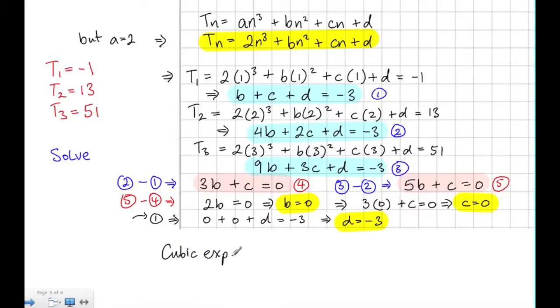But now we know what b, c, and d are. So our cubic expression is 2n³ + 0n² + 0n - 3. Neatening this up, this is 2n³ - 3. And that's what term n is equal to.